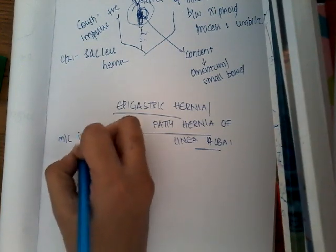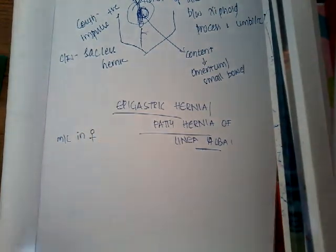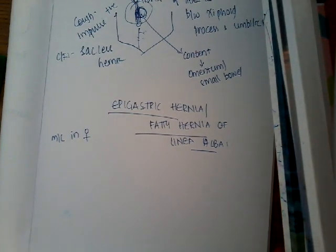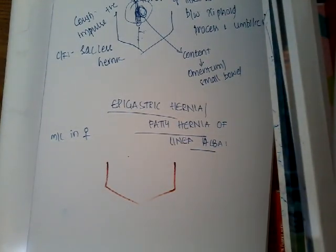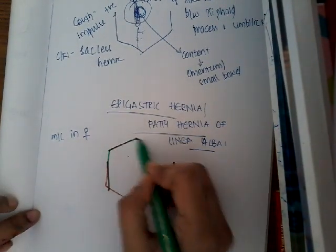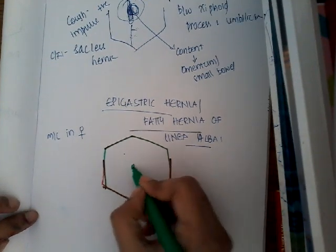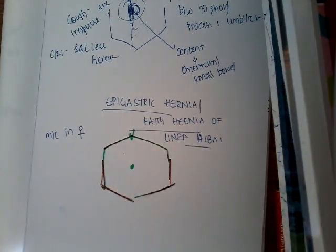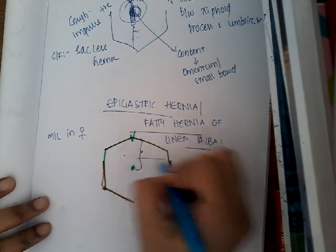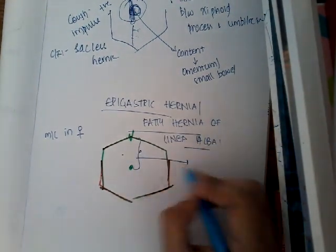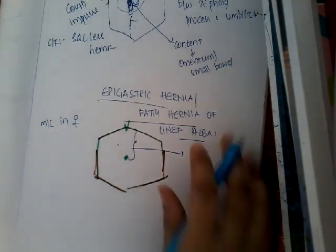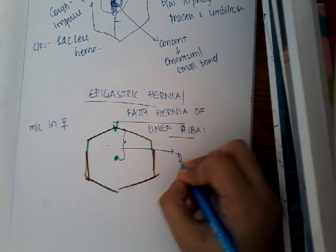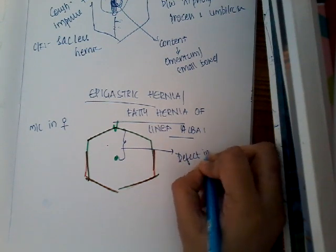Epigastric hernia is most common in females. If we think of the abdomen, with the xiphoid process above and the umbilicus below, any hernia that occurs between the xiphoid process and the umbilicus in the midline, due to a defect in the linea alba, is called an epigastric hernia. First, there should be a defect in the linea alba.